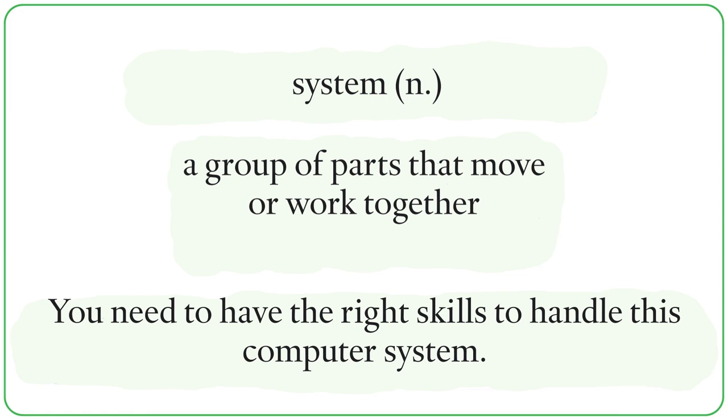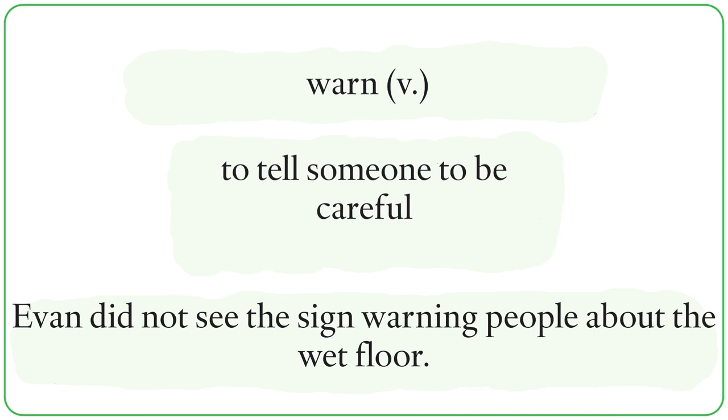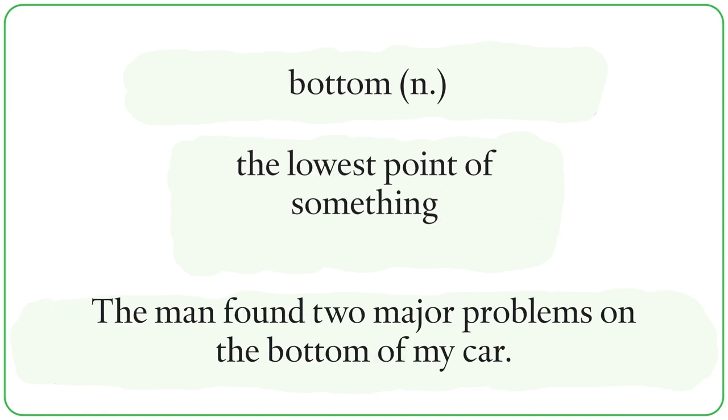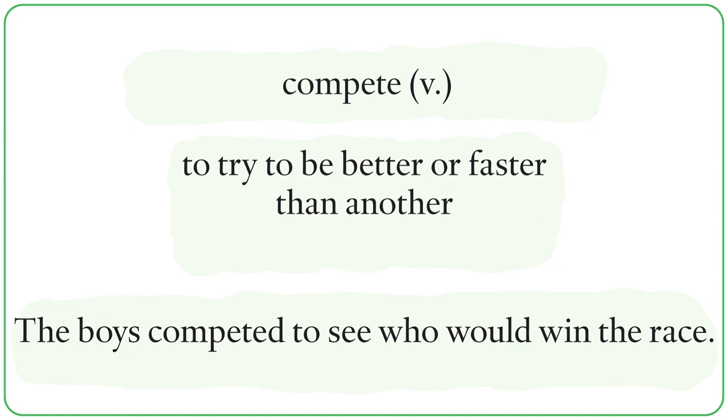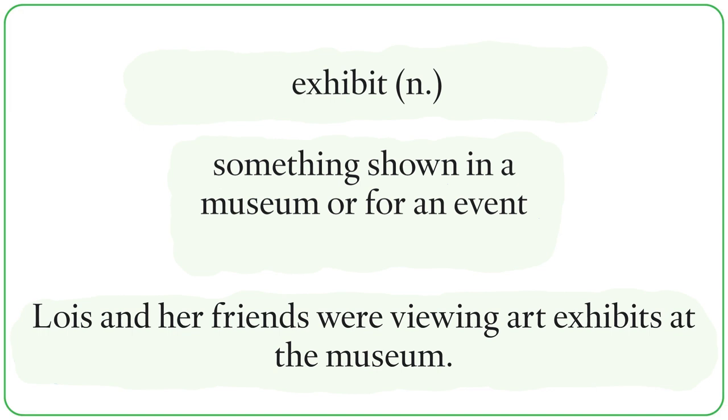System. You need to have the right skills to handle this computer system. War. The men fought in the war for several years before it ended. Warn. Evan did not see the sign warning people about the wet floor. Announce. The press has announced the birth of the baby princess. Bottom. The man found two major problems on the bottom of my car. Compete. The boys competed to see who would win the race. Copy. In the office, Rachel copies papers with a machine. Exhibit. Lois and her friends were viewing art exhibits at the museum. Print. Some businesses make their fortune printing things for others. Project. The teenagers worked together on their history project.